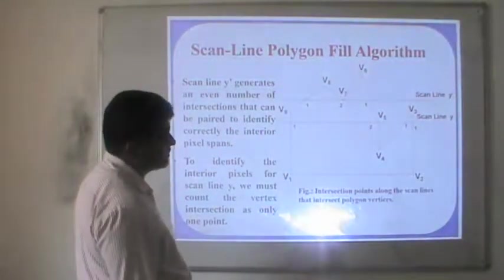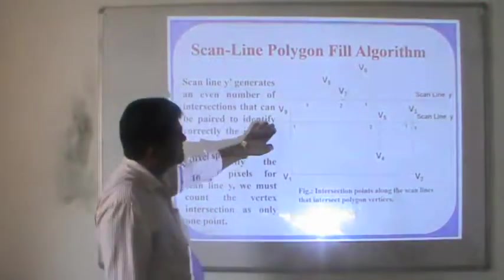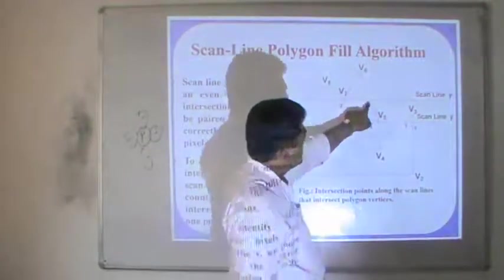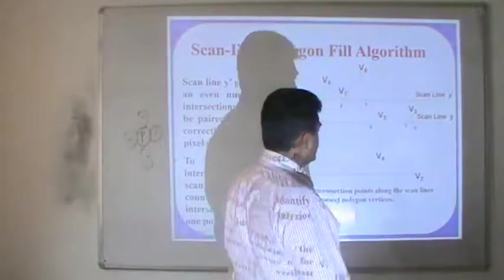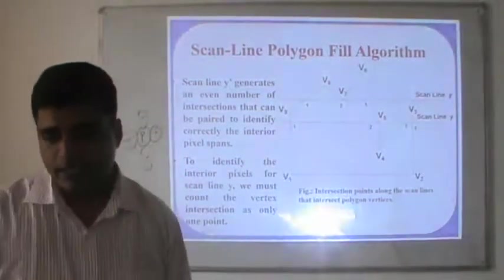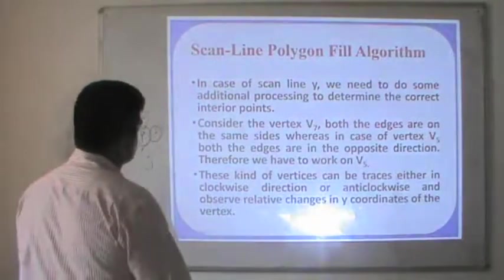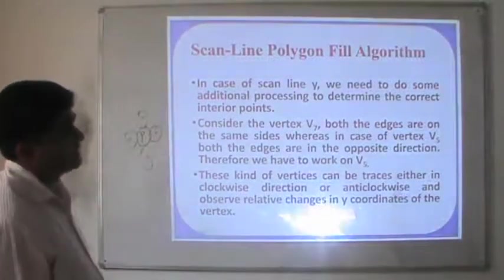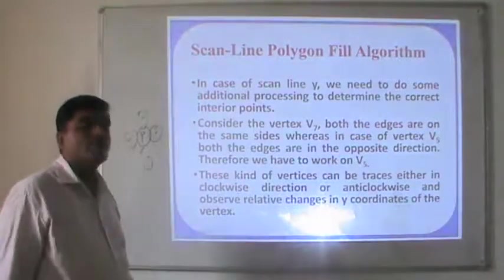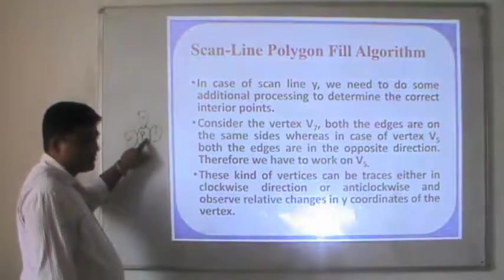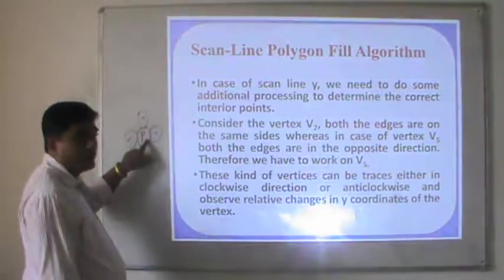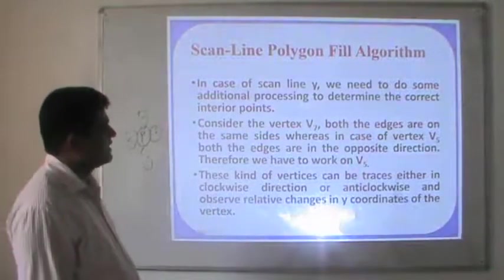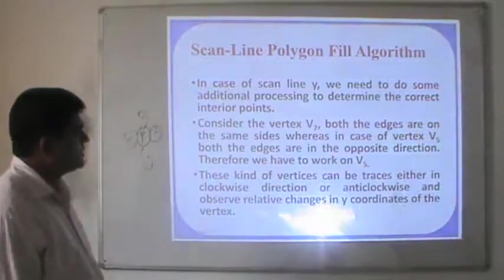For example, continuing with that — these are the two scanlines passing here: scanline y and scanline y-dash. We have to find out the points of intersection and see which part is to be included in the edge list. In the case of scanline y, we need to do some additional processing to determine the correct interior points. We consider vertex v7, where both edges are on the same side, whereas for vertex v5, both edges are on opposite directions. Such vertices can be traced either clockwise or anticlockwise.